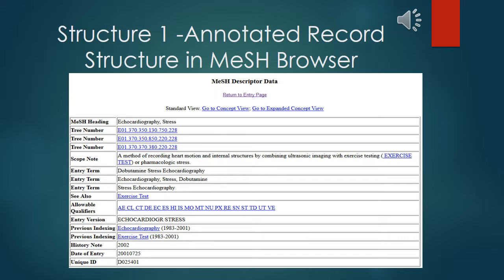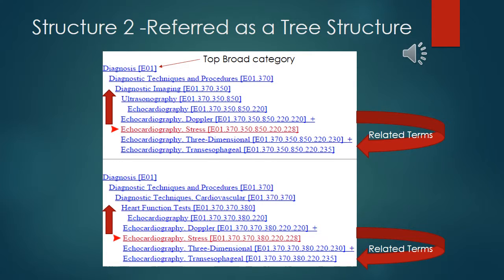Here is another example of the first structure — an annotated record in the MeSH browser online, where a description of the term is given in the scope note. The second structure, seen here in PubMed, looks the same in the MeSH browser. Here are two of the three tree structures available, including the 'echocardiography stress' text in red. Broader terms to expand a search are above 'echocardiography stress' on the left of the screen, while narrower terms are not shown in these examples. Only related terms are shown, which are other heart function tests or relating to various types of ultrasonography.